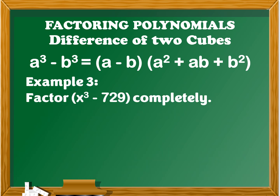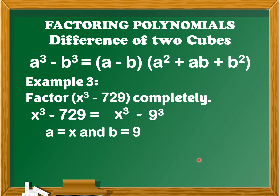For example number 3, factor x cubed minus 729 completely. We're going to write the given polynomial in the form of a cubed minus b cubed. So we have x cubed minus 9 cubed, since 729 is equal to 9 cubed. Next, we're going to determine the value of a and b: the value of a is x and the value of b is 9.